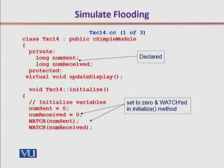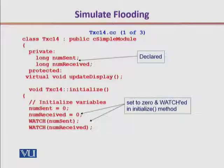Let's look at the TX14 C++ file. Here, we declared two private member variables: the number of packets sent as 'num_sent,' which is a long variable, and 'num_received,' referring to the number of sent and received packets. When initializing, we set both of these to zero, and we also started a watch method that counts the total number of messages sent and received.